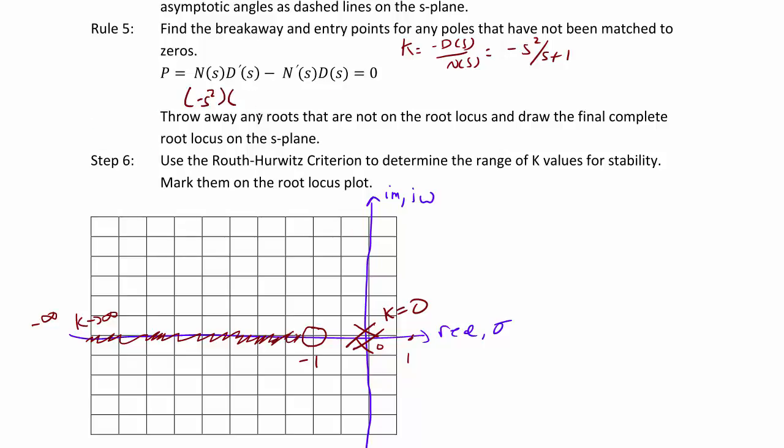Negative s squared times 1 minus 2s times s plus 1, and that equals 0. So that factors into s times s plus 2 equals 0. So our breakaway points are at 0 and negative 2.